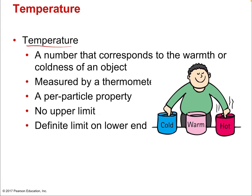Let's define temperature. It's a number that corresponds to the warmth or coldness of an object — that's how we think about it in everyday life, and it's measured by a thermometer. Temperature is a per-particle property, meaning it's directly related to the behavior of an average particle in a substance. If I have a glass of cold water, the temperature of that water is directly proportional to the average behavior of the molecules in that cup of water. It has no upper limit — you can have an infinitely high temperature — though there is a definite lower limit.